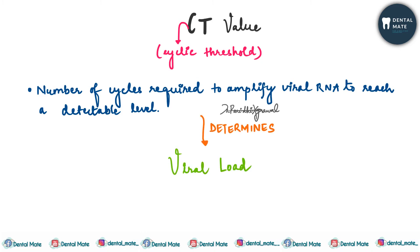Viral load is inversely proportional to the CT value. If the viral load is high, the virus is easily detectable with fewer amplification cycles, so the CT value would be less. But if the viral load is low, we need to amplify the viral RNA numerous times, because of which the CT value increases.